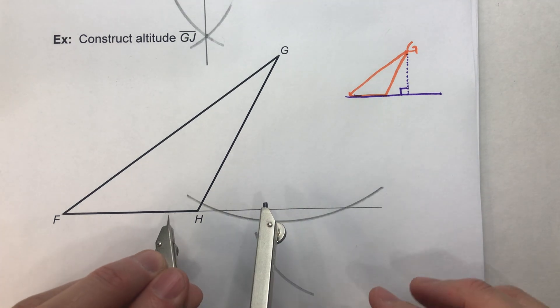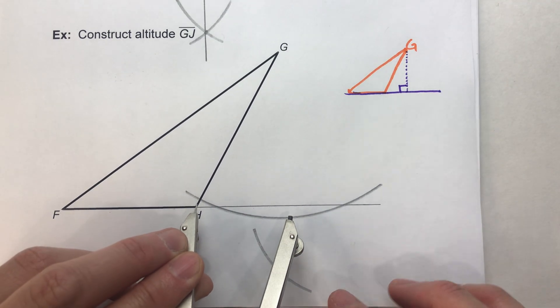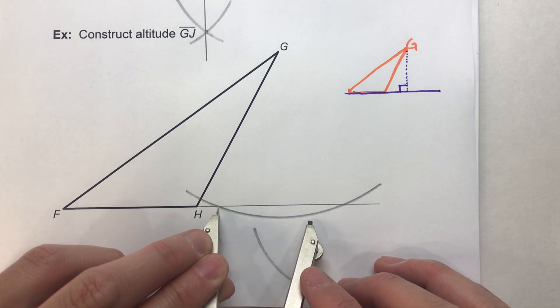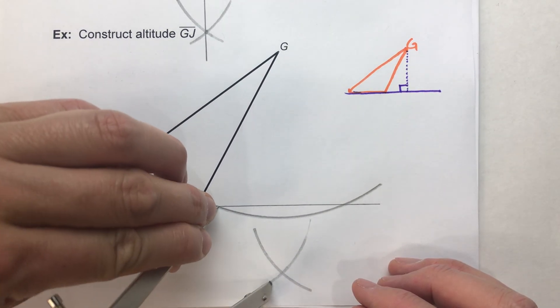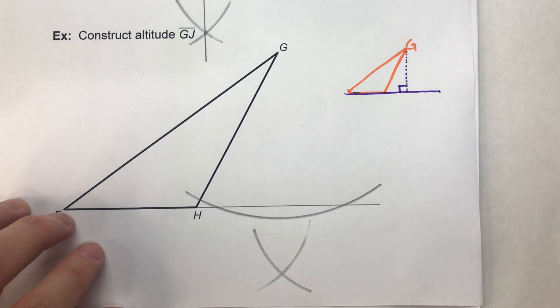And using that exact same compass setting, I'm going to swing an arc from where the arc hits the other side. There we go. And see where they intersect?